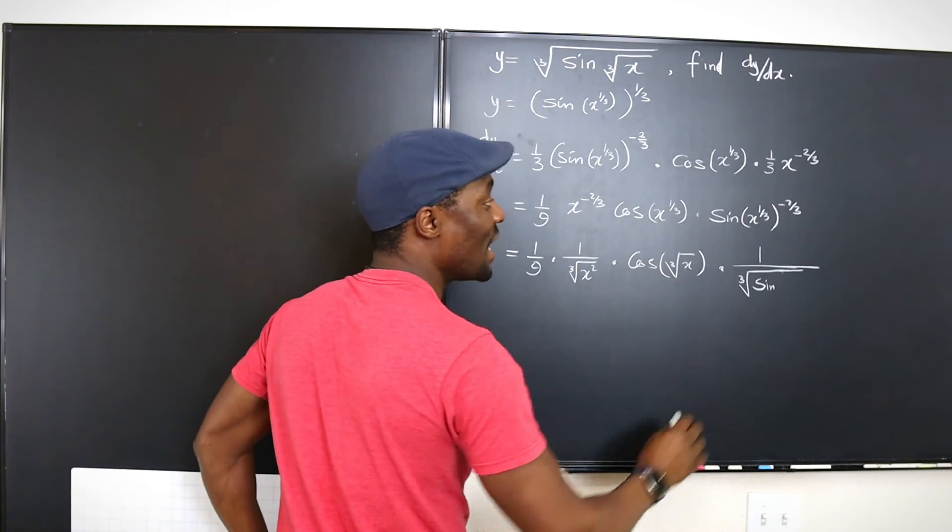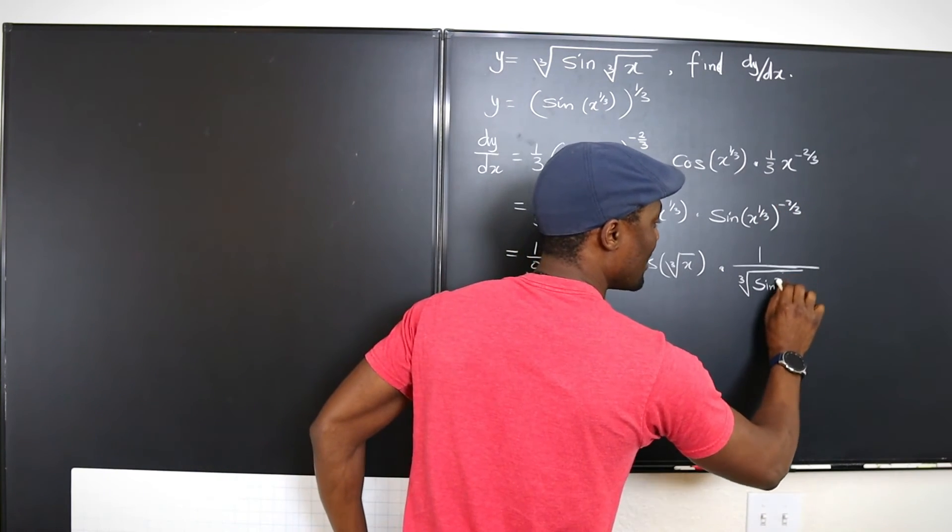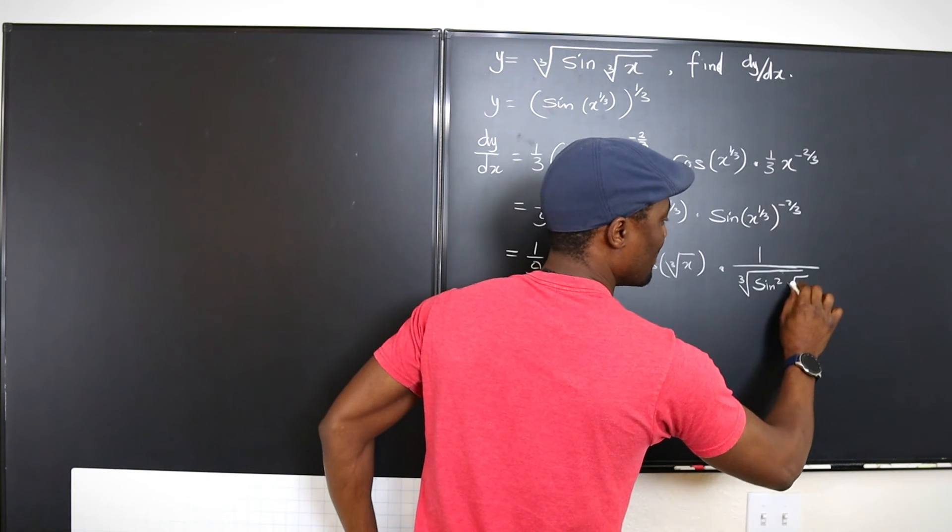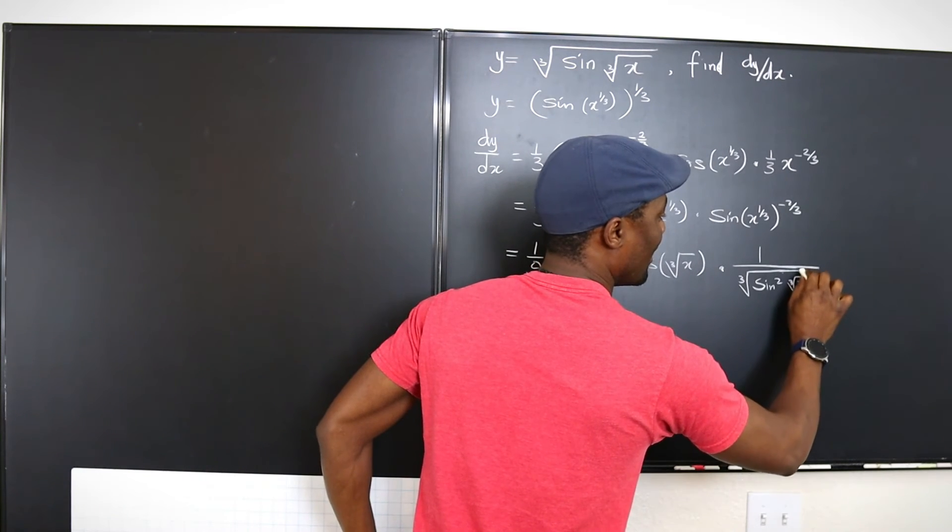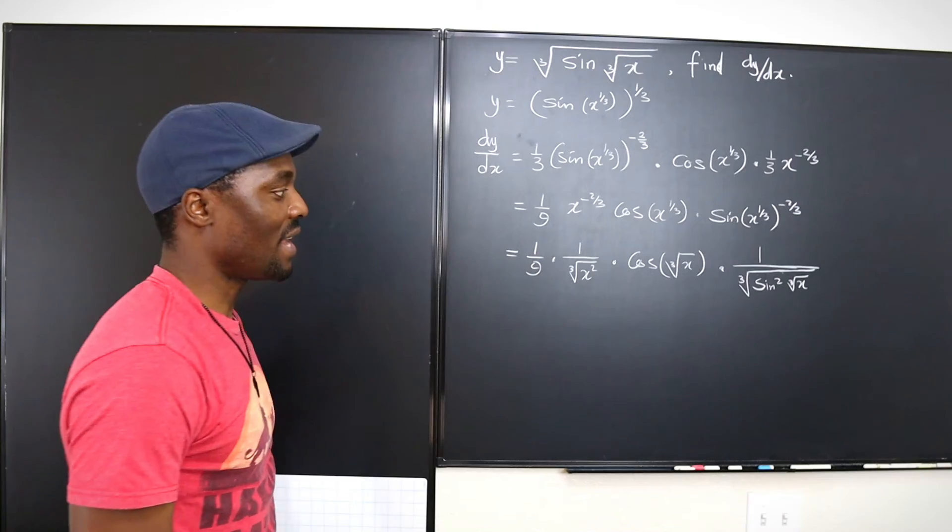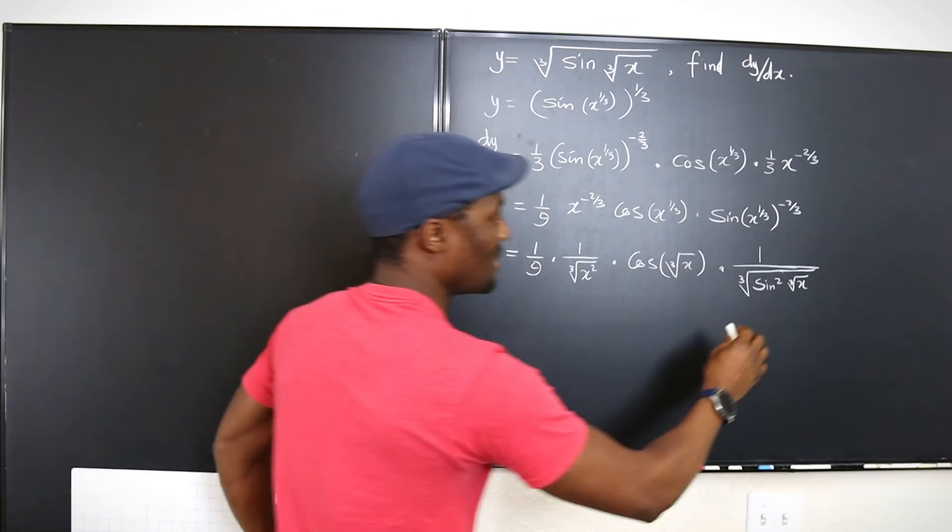Just watch how we're going to write this. It's going to be sine squared cube root of x. That is the way to write this. So let's put this in parenthesis.